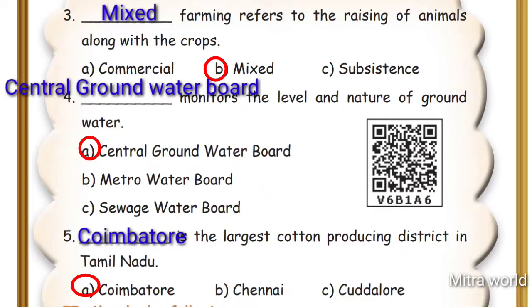Question 5: ___ is the largest cotton producing district in Tamil Nadu. Options are: Coimbatore, Chennai, Cuddalore. Answer: Coimbatore. Coimbatore is the largest cotton producing district in Tamil Nadu.